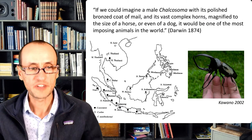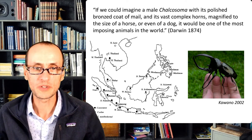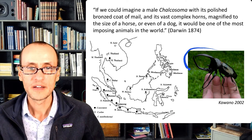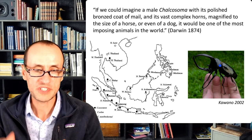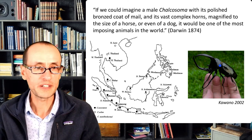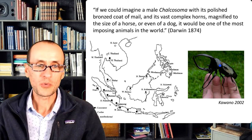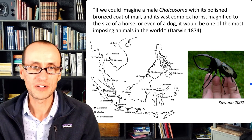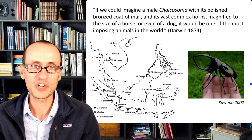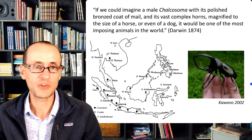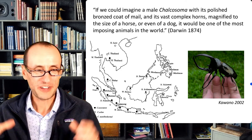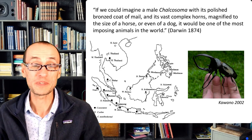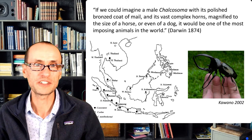Here's an example of character displacement from these beetles with complex horns, particularly in males used for fighting and jousting for females. This is a beetle even Darwin recognized. He wrote that if you could imagine one of these male Chalcosoma with its polished bronze coat and vast complex horns magnified to the size of a horse or even a dog, it would be one of the most imposing animals in the world — beautiful from a distance, but quite terrifying if you were there in person.